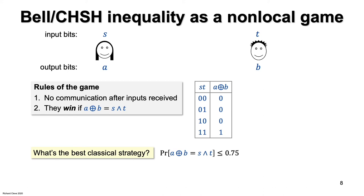Any classical strategy can succeed with probability at most 3 quarters. This can be shown along the lines of the proof in the previous lecture that the best classical success probability of the GHZ game is 3 quarters. We can summarize the winning conditions in terms of 4 equations, and at most 3 of those 4 equations can be satisfied.